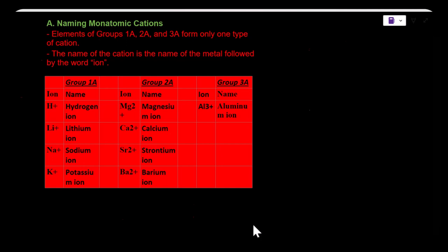The name of the cation is just the name of the metal followed by the word ion. So with hydrogen it would just be hydrogen ion, lithium it would be lithium ion, and so on going down.